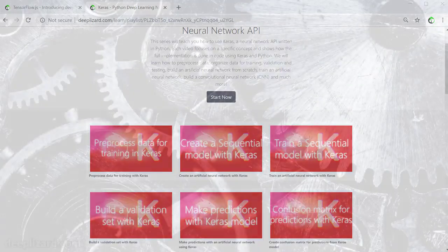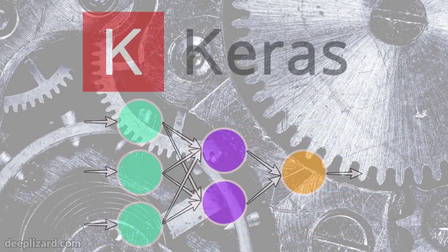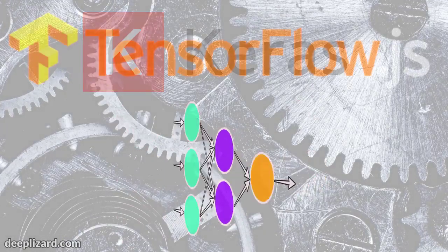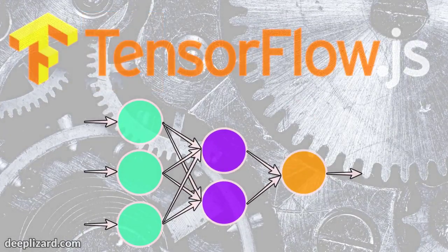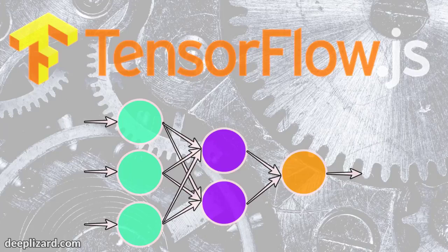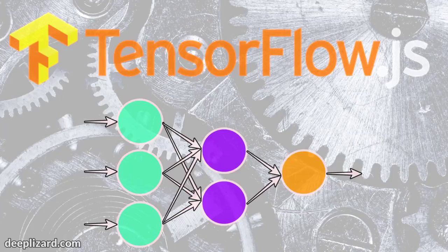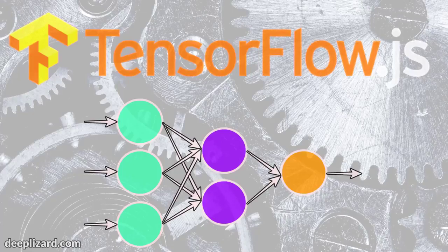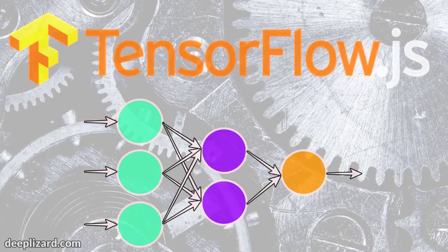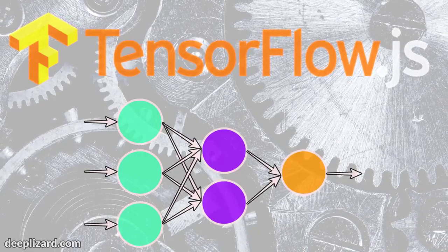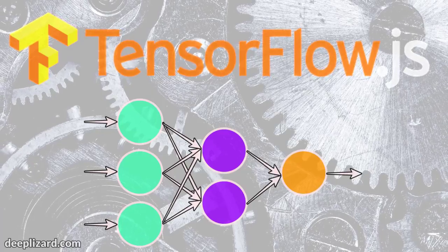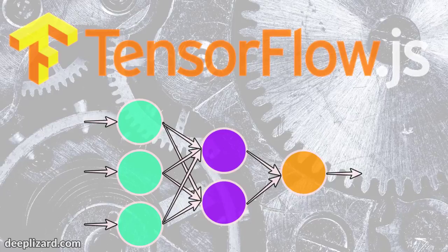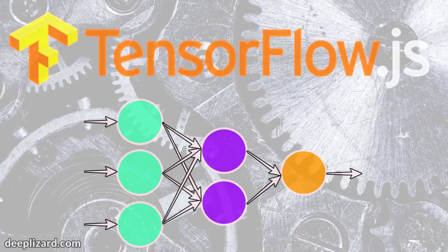Given this, it makes sense that we should be able to take a model we built or trained in Keras and port it over to TensorFlow.js and use it in the browser with the Layers API. Otherwise, the alternative would be to build a model from scratch and train it from scratch in the browser, and as we discussed, that's not always going to be ideal. So having the ability and convenience to convert pre-built or pre-trained Keras models to run in the browser is definitely going to come in handy.